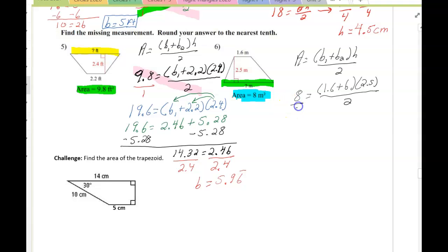I'm going to put this over 1 and cross multiply. When I cross multiply, I get 16 equals 1.6 plus b times 2.5. I'm going to distribute. 1.6 times 2.5 equals 4. So 16 equals 4 plus 2.5b. I'm going to take away 4 from both sides. 12 equals 2.5b. Divide 12 by 2.5, and I will get b to be 4.8.